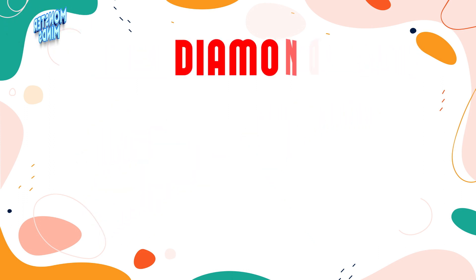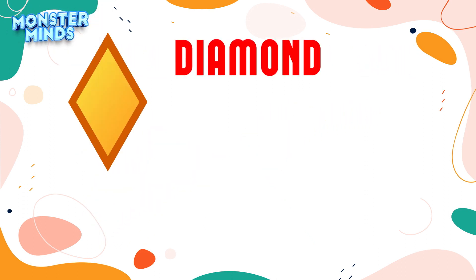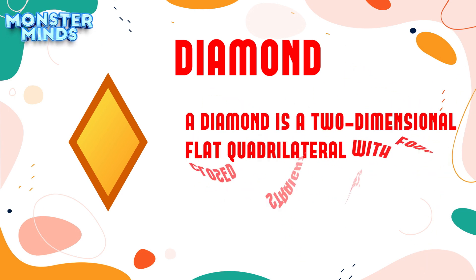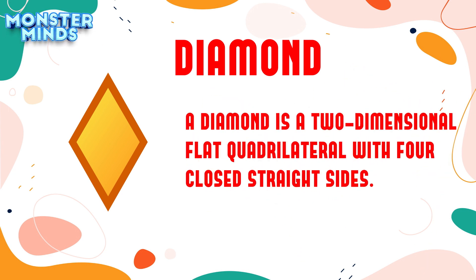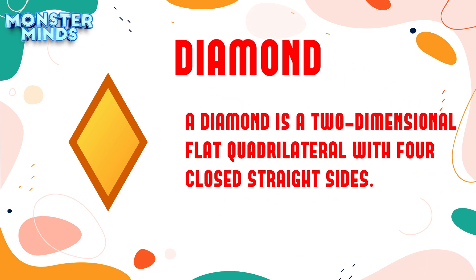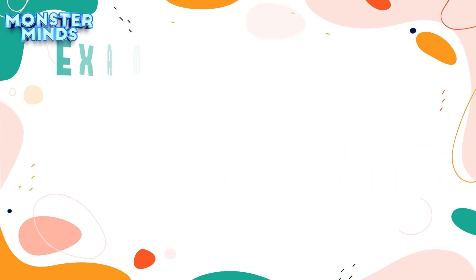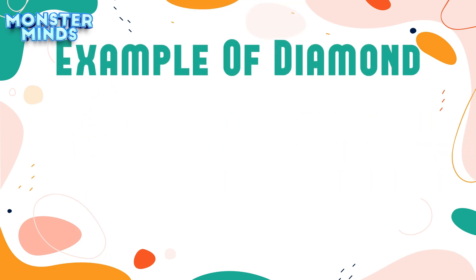Diamond: A diamond is a two-dimensional flat quadrilateral with four closed straight sides. Example of Diamond.